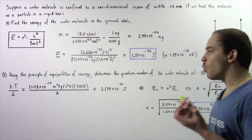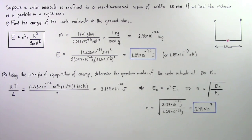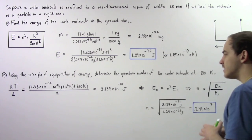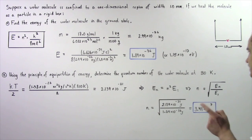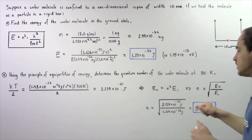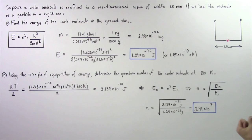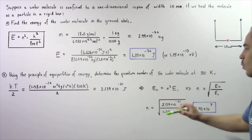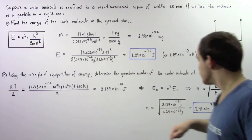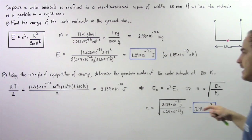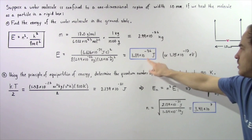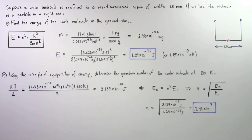Now we know the energy our water molecule has at 310 Kelvins, so we apply the energy equation to determine the quantum number. The energy at quantum number N equals N squared multiplied by the ground state energy E₁. We found E₁ in part A, and EN is the thermal energy we just calculated. Solving for N gives N equals the square root of EN divided by E₁. Taking the square root, we get a quantum number of about 3.41 times 10 to the 7.